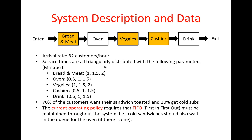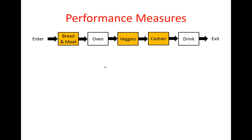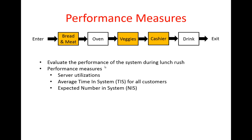So far everything is the same as the previous module, except that this time we would like to add bulking to our model. Bulking is basically when you go to a restaurant and see a long line and decide to go somewhere else. In this model, we're going to assume that customers balk if there are six people in the system. As for the performance measures, we would like to evaluate the system during lunch rush, doing a steady state analysis. Specifically, we're interested in server utilizations, average time in system for all customers, and expected number in system. We're also interested in the percentage of customers that balk, and the average time in system per customer type — customers that get cold sandwiches and customers that want their sandwich toasted.